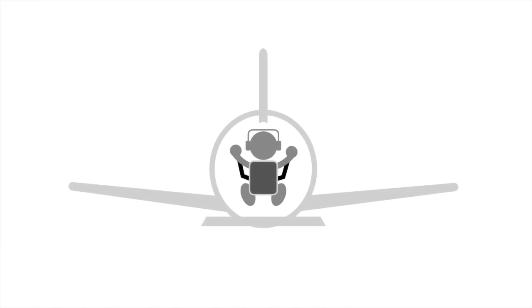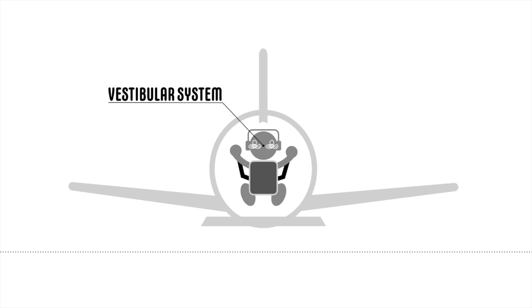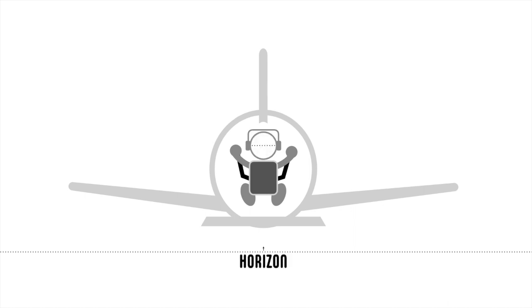When an aeroplane flies in cloud, the pilot can't see the Earth's horizon to know if the aeroplane is going up, down, turning or in level flight. The pilot relies on the vestibular system inside the ears to sense balance and gauge where the horizon is.